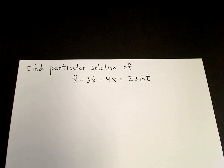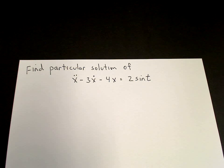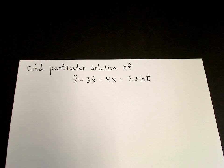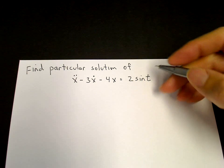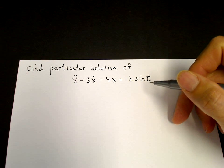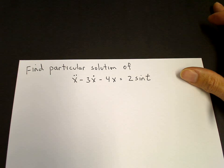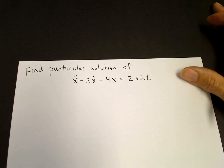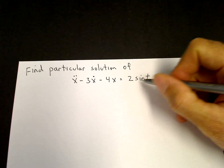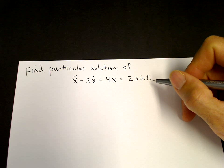Let's see how to find a particular solution of the inhomogeneous second-order linear equation: x double dot minus 3x dot minus 4x equals 2 sine t. I will show you a method which uses complex variables. The idea is that we solve a complex differential equation, writing the right-hand side as an exponential function.